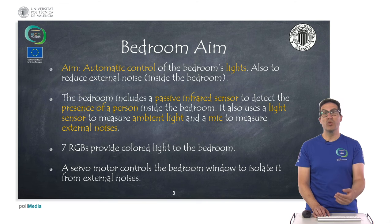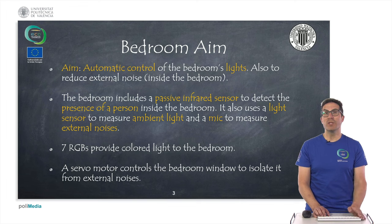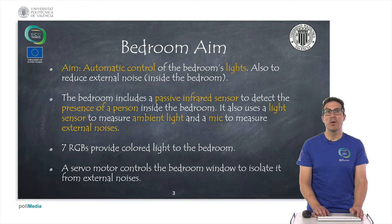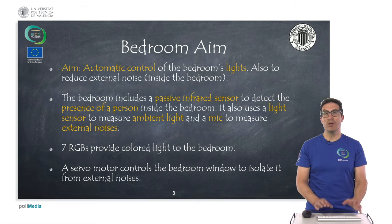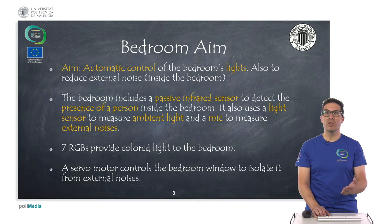We also use a light sensor that will measure ambient light, which will be placed outside the room. And we will use a mic in order to measure the ambient or external noises. We will use a colored RGB LED strip to produce light in the bedroom, and also a servo in order to control the position of a window so we can isolate it from external noises.